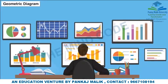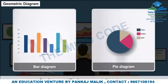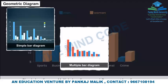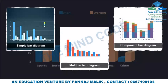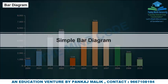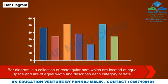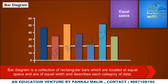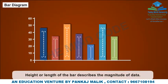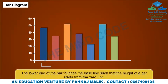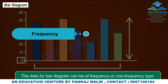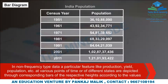Geometric Diagrams — Bar Diagram: Bar diagrams and pi diagrams fall in this category. Bar diagrams are of three types: simple bar diagram, multiple bar diagram, and component bar diagram. A bar diagram is a collection of rectangular bars located at equal spaces of equal width, each describing a category of data. The height or length of the bar describes the magnitude of data, starting from zero at the baseline.